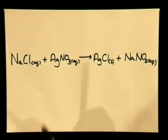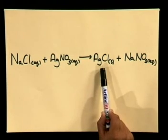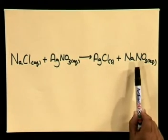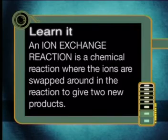This is what the completed equation for this reaction looks like: aqueous sodium chloride solution reacts with aqueous silver nitrate solution to give us our solid silver chloride precipitate, while sodium nitrate remains in aqueous solution. In this reaction, both solutions contain ions, and the ions were swapped around — the sodium started with the chloride and ended up with the nitrate, and the silver started with the nitrate and ended up with the chloride. This is what we call an ion exchange reaction. An ion exchange reaction is a chemical reaction where the ions are swapped around to give two new products.